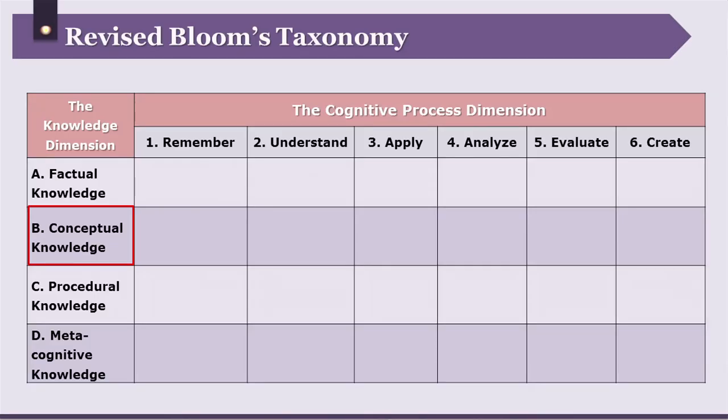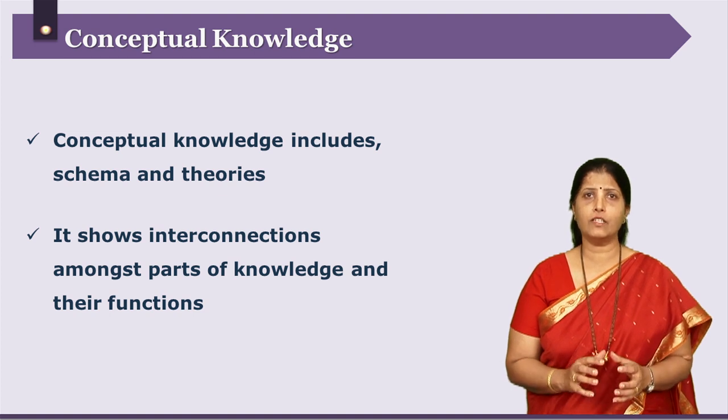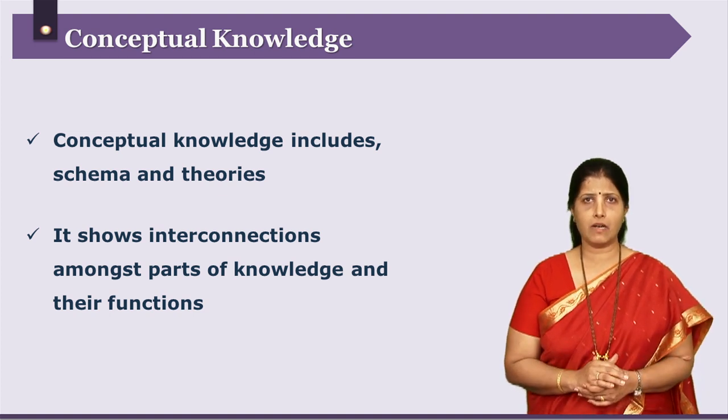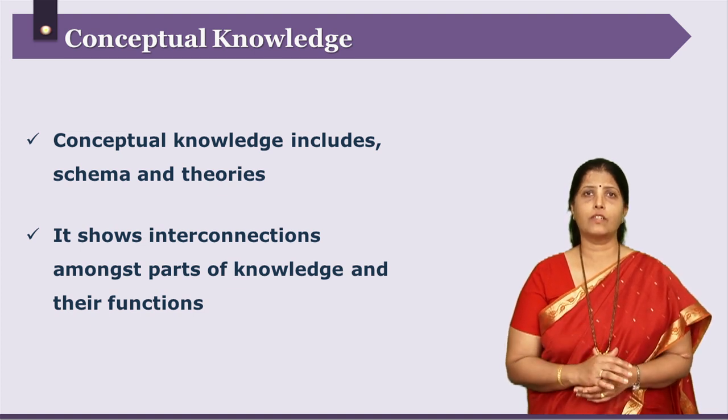Now let us take a look at the next category of knowledge dimension: conceptual knowledge. When the components of content form intricate inter-relationships amongst each other forming complex schemas, large schemas, models, or theories, this is called conceptual knowledge. For example, if you consider the seasons which are caused on earth, you would need to consider the earth's structure, the rotation of earth, the revolution of earth, and the axis of earth to understand the concept of seasons. When these isolated facts start making sense together in a way that explains a complex phenomenon, it starts formulating a concept.